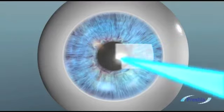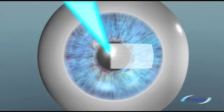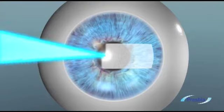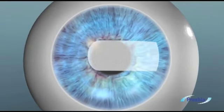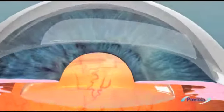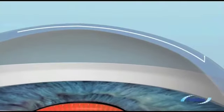The doctor creates a small pocket within the corneal stroma of the non-dominant eye using a femtosecond laser. This middle area of the cornea houses the microlens just above the pupil, and the implanted lens is not visible to the naked eye.